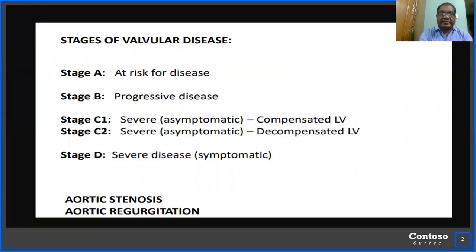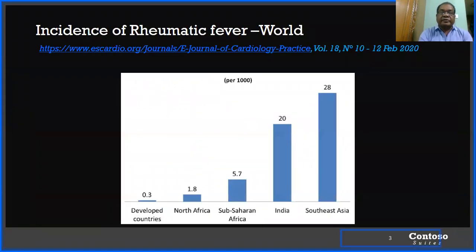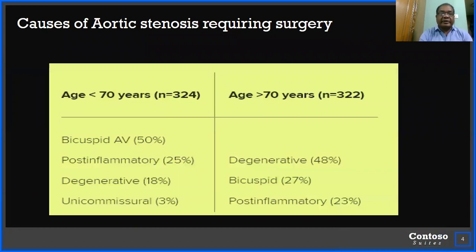In this lecture we'll be discussing aortic stenosis and aortic regurgitation presentation and management. In our subcontinent — particularly India, Bangladesh, Pakistan, Sri Lanka — and in Southeast Asian countries, rheumatic fever is the most common cause of valvular disease. The incidence of rheumatic fever in developed countries is only 0.3 per thousand population, whereas in North Africa it is 1.8, in sub-Saharan Africa it is 5.7, in India it is 20, and in the Southeast Asian region it is altogether 28 per thousand population.